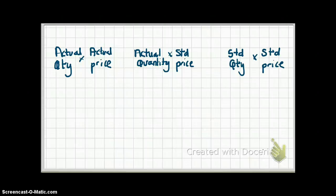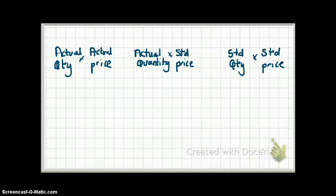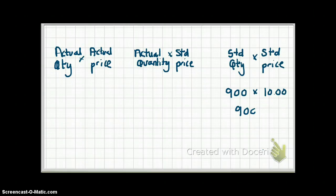You don't have to remember anything else but these three columns. On the right-hand side, it's standard by standard. In the middle column, you flex the quantity to reflect actual quantity bought, multiplied by the standard price. And on the left-most column, actual quantity times actual price. The standard quantity allowed for our production was 900 pounds, and the standard price was $10, giving a standard cost of $9,000.